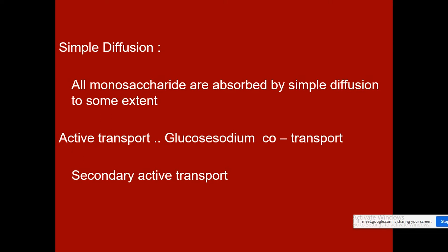Facilitated transportation requires a carrier — a facilitator is needed for the transportation of substances, and such transport is called facilitated transportation. Active transport requires energy for the transportation of certain substances. Monosaccharides are absorbed by simple diffusion only to a limited extent, but mostly they are absorbed by facilitated transportation and to some extent by active transportation.